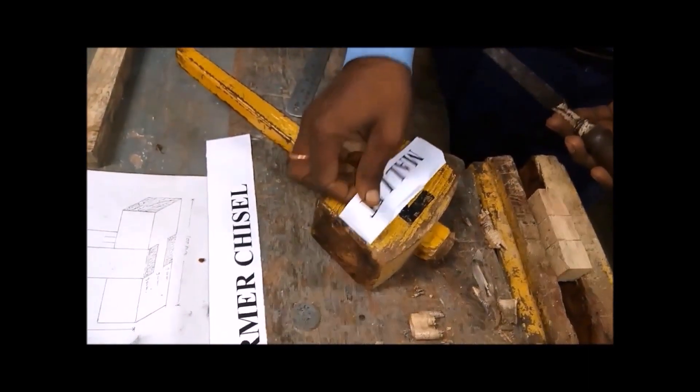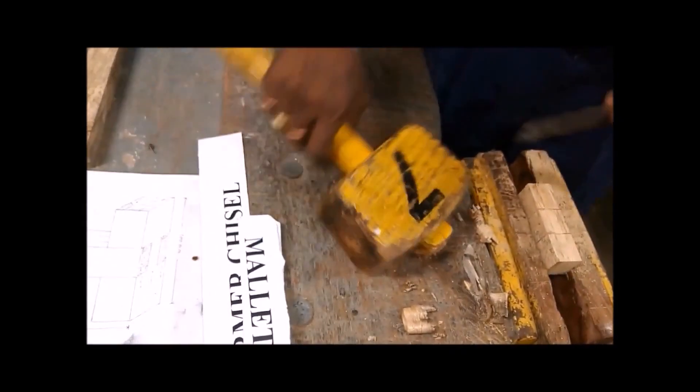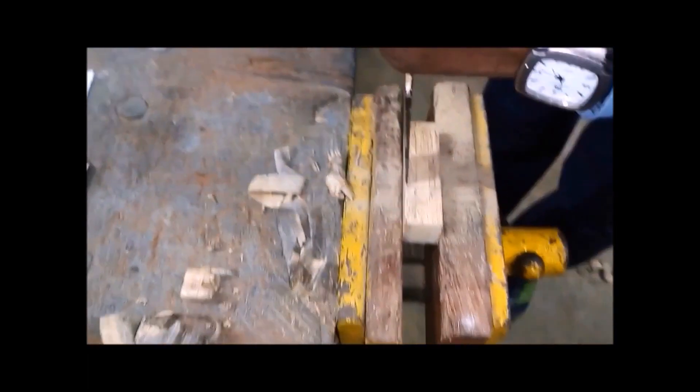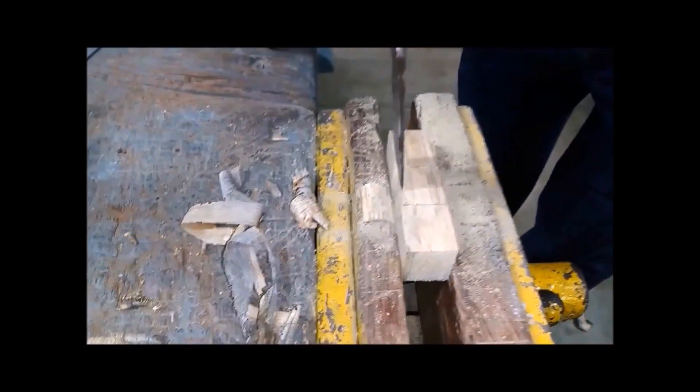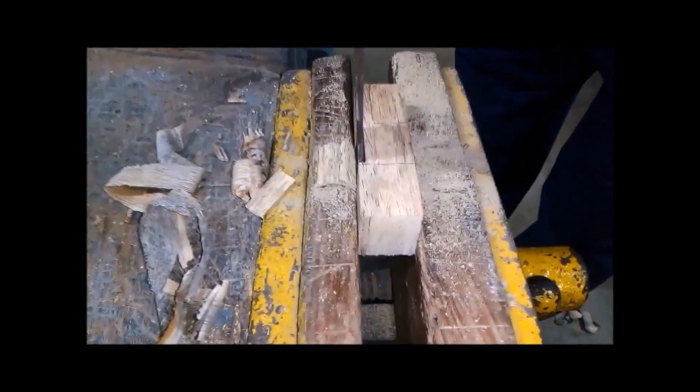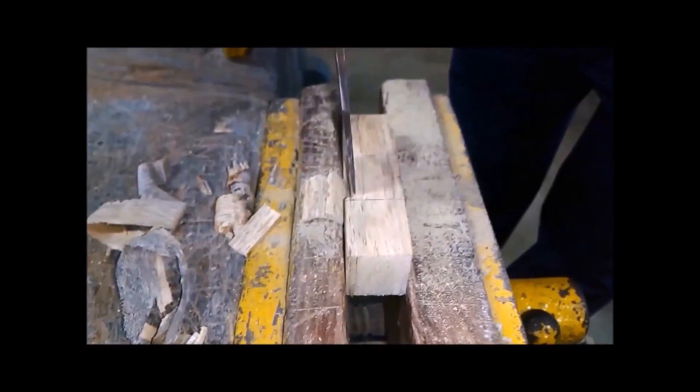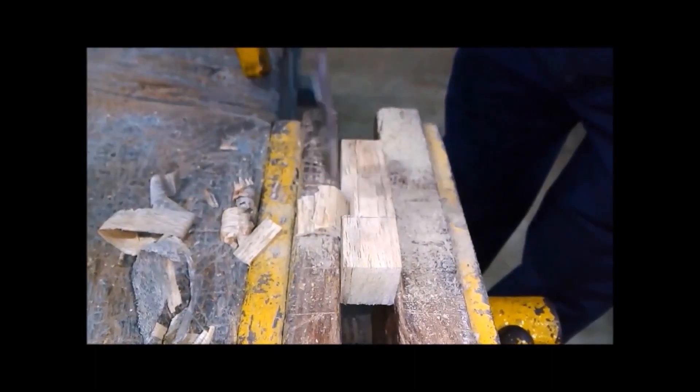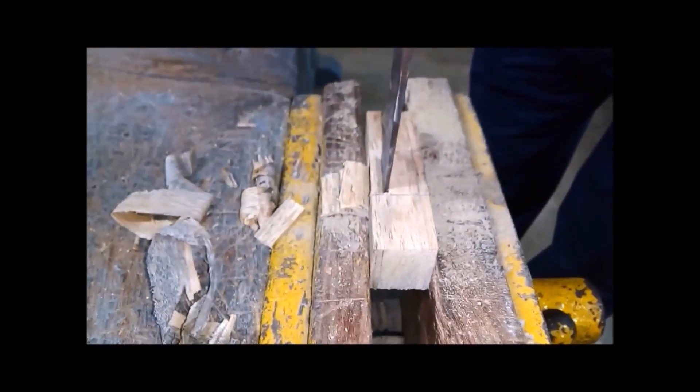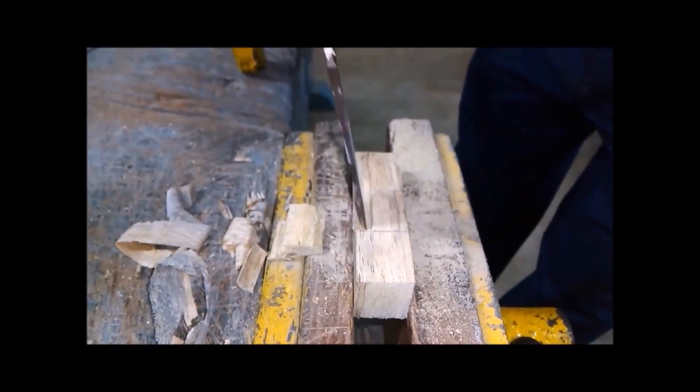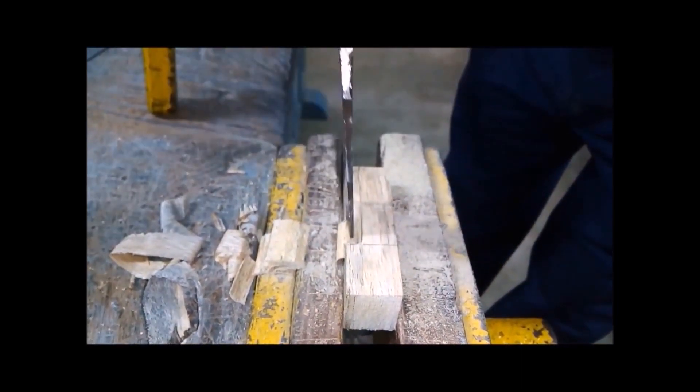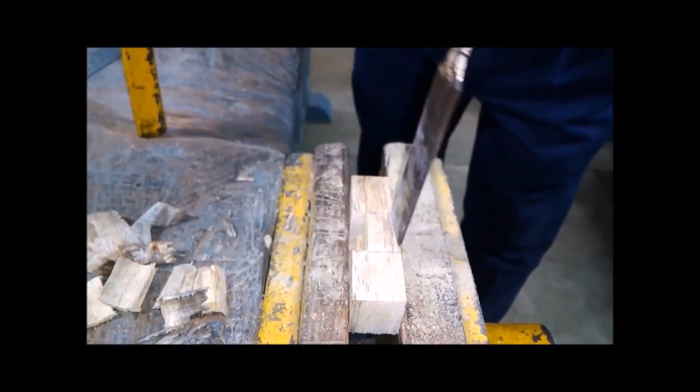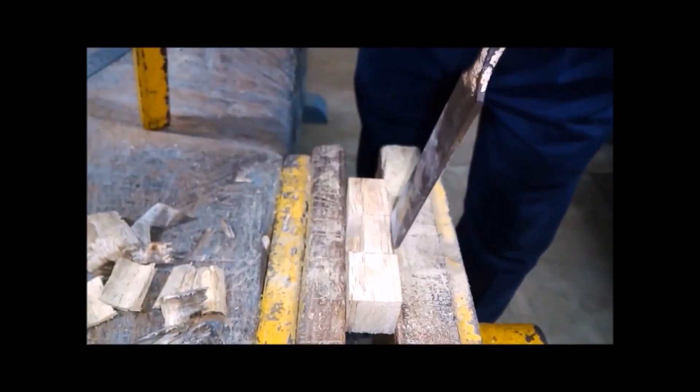With the help of the firmer chisel and mallet we remove the extra material for making the tenon. We should not give more thickness cuts, means at a time we should not take 9 mm thickness. We should give small cuts like 3 mm, otherwise the job may break.